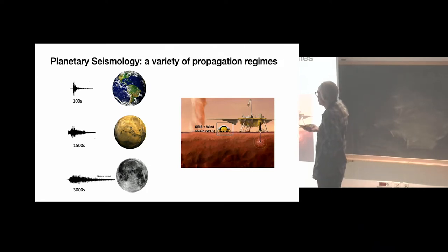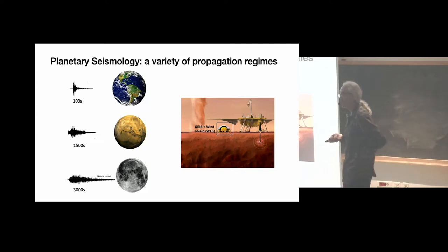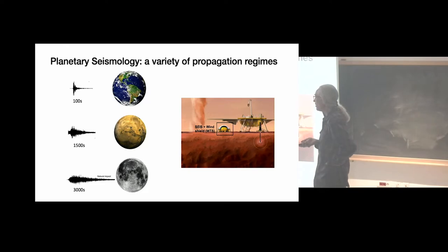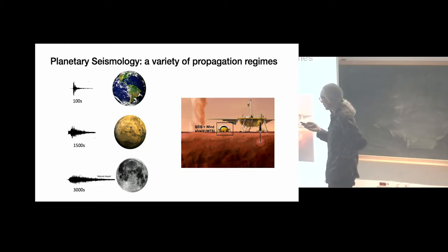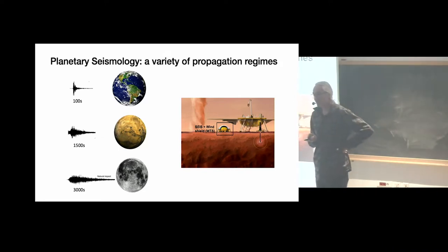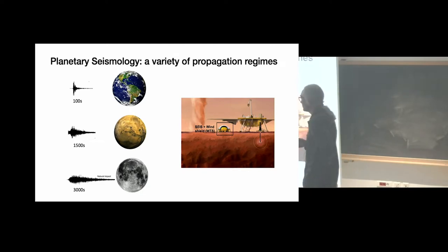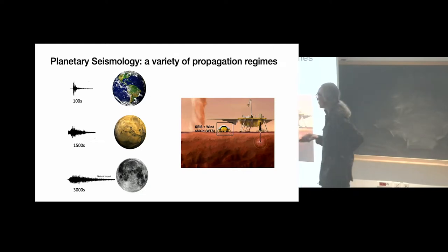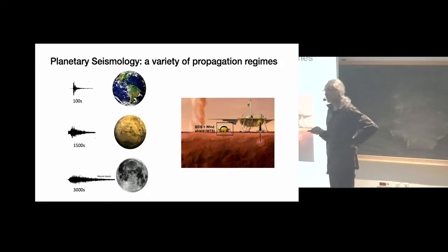Planetary seismology is a large N seismology, where N is the number of scientists per megabyte of data. We had arrays on the Moon, but only four stations. On Mars, we have a super high density — two stations within a few centimeters. No, I'm just kidding. Indeed, we are working with very few data, difficult data, and I'm going to show you what we try to do with it.